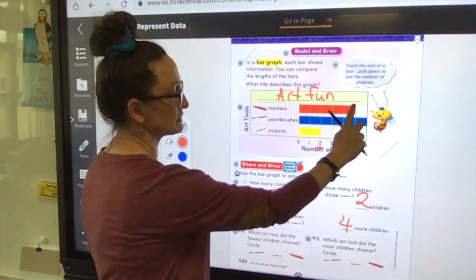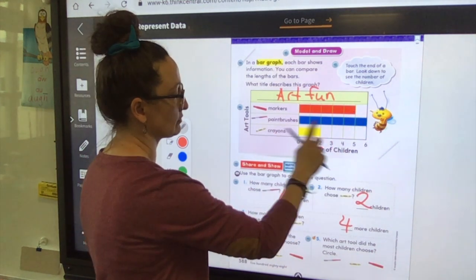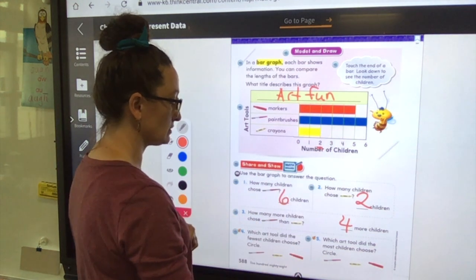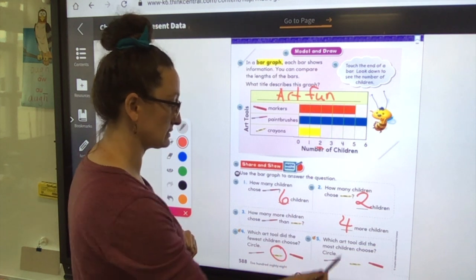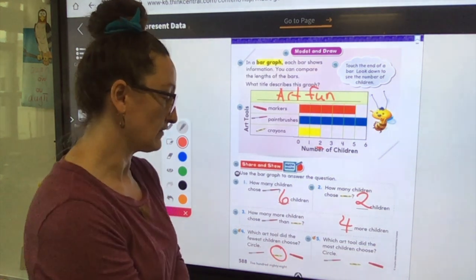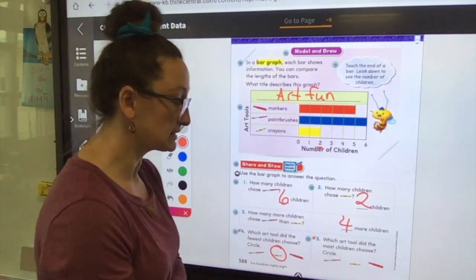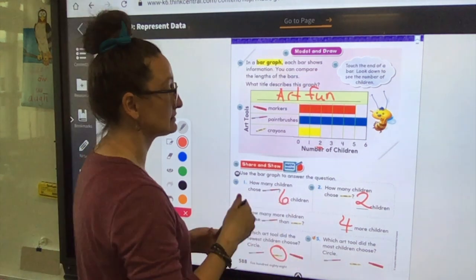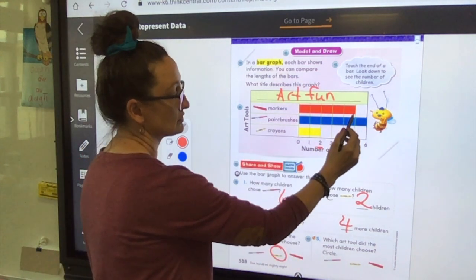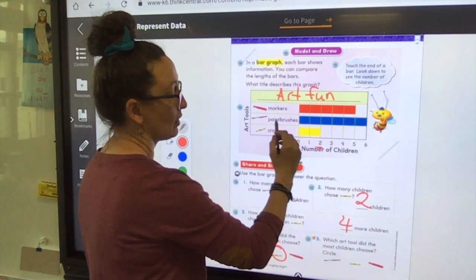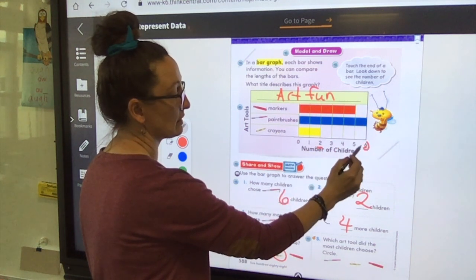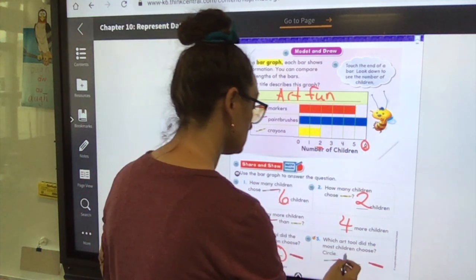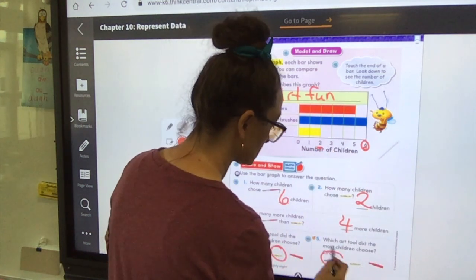Okay, so let's put our four back there. Okay, which one has the lowest number? Markers five, paintbrushes six, crayons two. Is two the lowest number? So I'm going to go and circle crayons. Look at number five. Which art tool did the most children choose? So what's the highest number? Which one has the highest number of kids that chose that one? So we know markers are five, paintbrush six. Oh, that might be right. Crayons two. Which number is the biggest? Six. So I'm gonna circle paintbrushes.